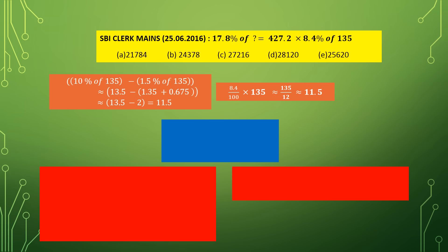We have explained two methods to calculate a percentage quickly. The first method is to break it down in terms of 10%, 5%, and so on. The second method, which should be tried first, is: divide 100 by the given percentage. If it comes near an exact integer, divide the number by that integer. The exact value of 8.5% of 135 is equal to 11.34.